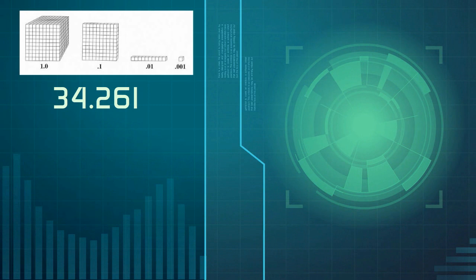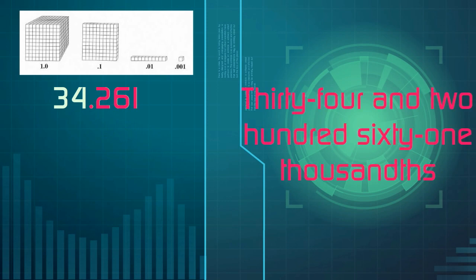Now that we have identified the place values, we must understand how to say them. Anything to the right of the decimal is read as if it was a standard number, followed by the place value of the last digit. In this case, two hundred sixty-one thousandths, making our entire number thirty-four and two hundred sixty-one thousandths.